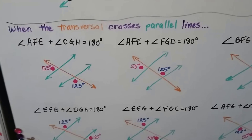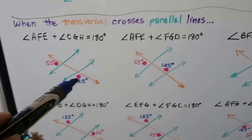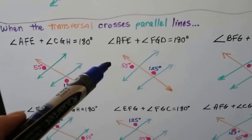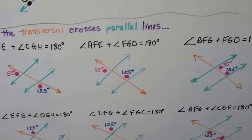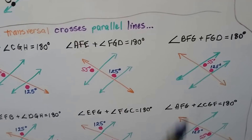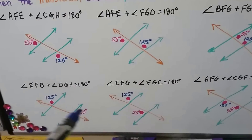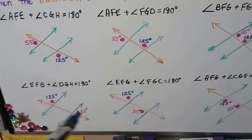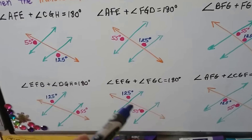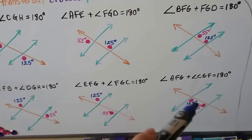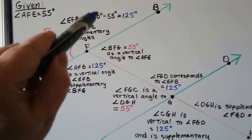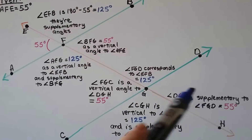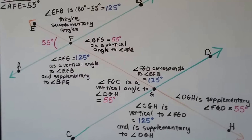When the transversal crosses parallel lines, this angle and this angle will total 180 degrees — and these two inside ones right here will total 180 degrees. This one and this one are both on the same side of the transversal, one at the top and one at the bottom, and they'll total 180 degrees. So we could find a lot of supplementary angles inside of here. That's 55 and that's 125.